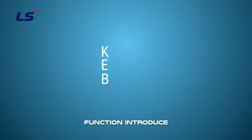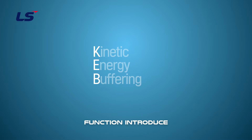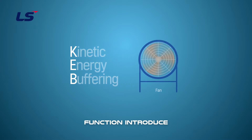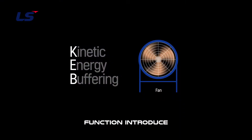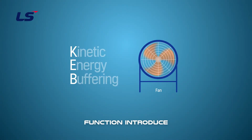KEB stands for Kinetic Energy Buffering, and it is a function that prevents equipment from stopping by efficiently using the energy stored inside the inverter during an instantaneous power failure. Instantaneous power failure refers to a phenomenon in which the power supply is interrupted for several milliseconds due to reasons such as lightning or power equipment failure, causing the device or system to stop momentarily.